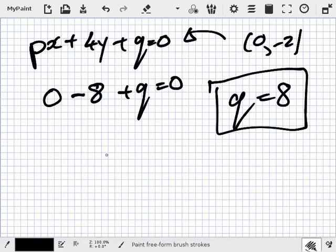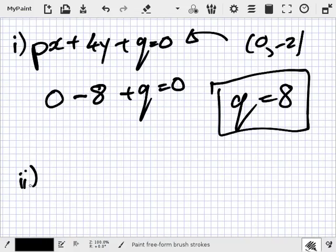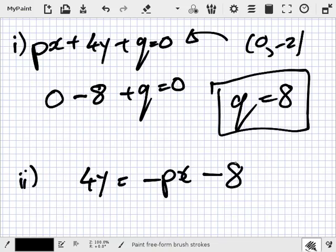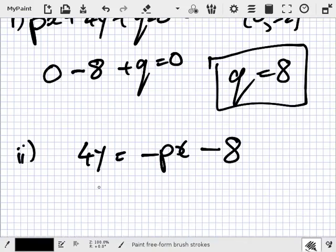Find P if the slope is 3. So if I rewrite this, I can say 4y equals minus Px minus Q, which is 8. So y equals minus P over 4 minus 2.